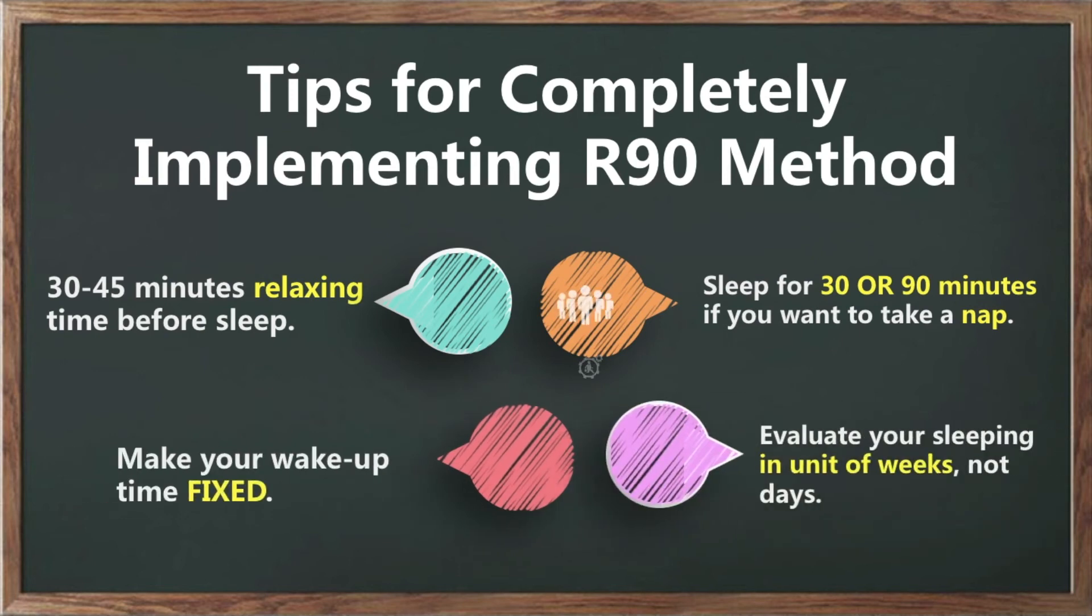The author also offers several tips for completely implementing the R90 method. First, you should give yourself 30 to 45 minutes relaxing time without doing intense activities before sleep. Second, make your wake-up time fixed. You can use 3 to 1 counting technique to wake you up. Third, sleep for 30 or 90 minutes if you want to take a nap. Finally, remember to evaluate your sleeping in units of weeks, not days.